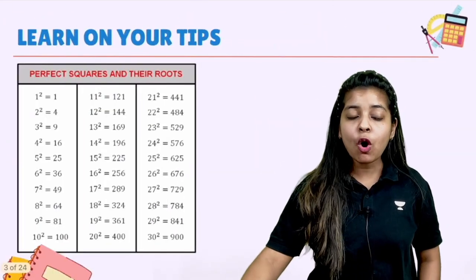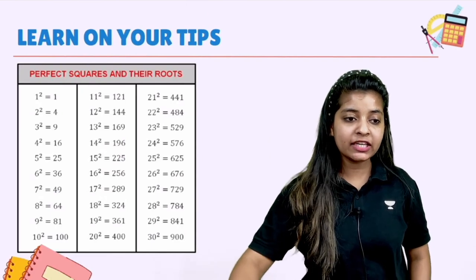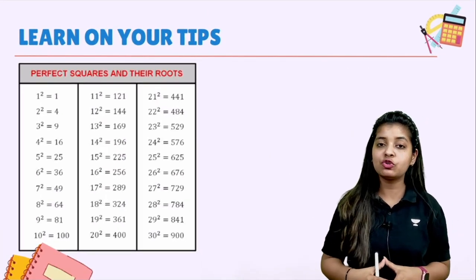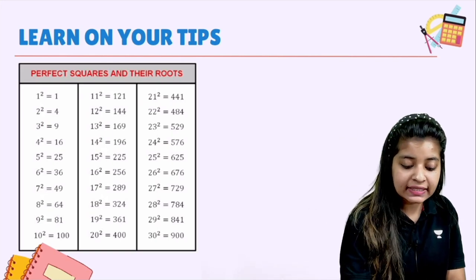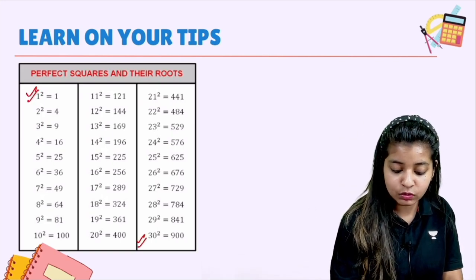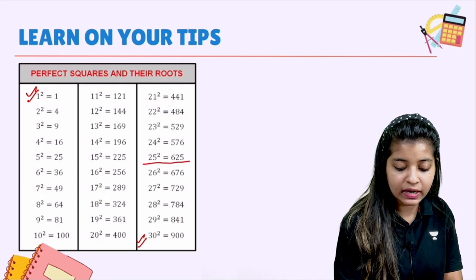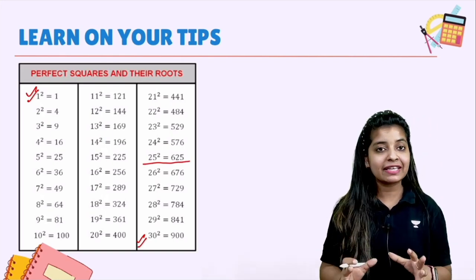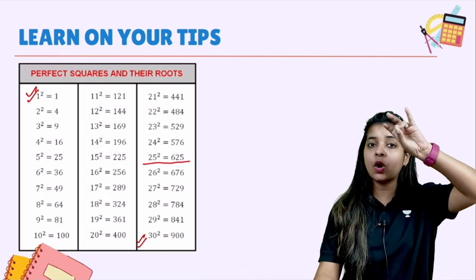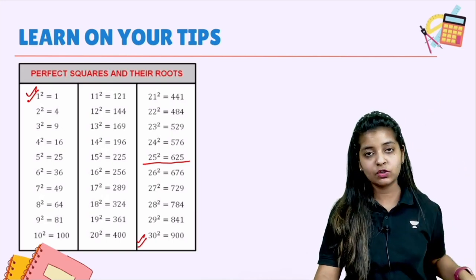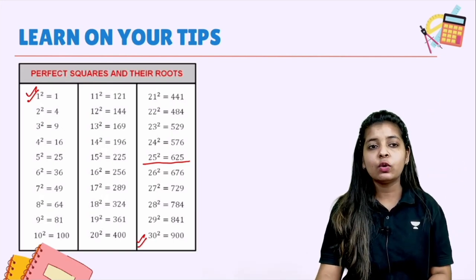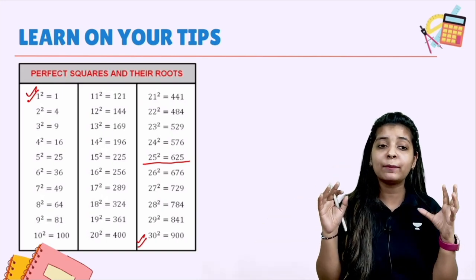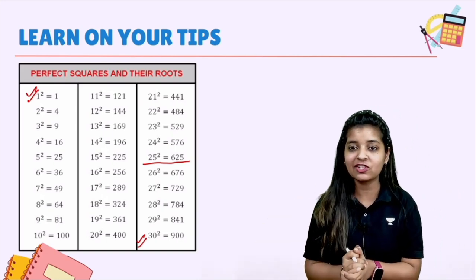So before moving further, before letting you know the trick everyone, there is one small task for you. You must learn the squares from 1 to 25 on your fingertips. I am giving you a minute — quickly go through them. Squares from 1 to 25 must be well-learned, so that this trick comes to you in a better way.